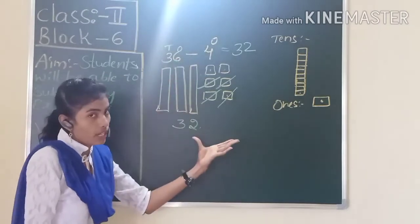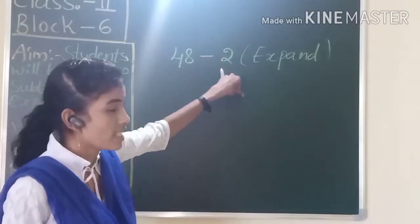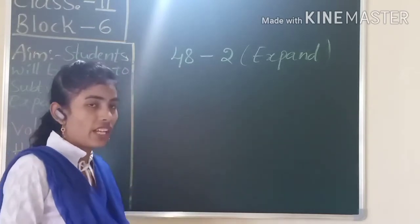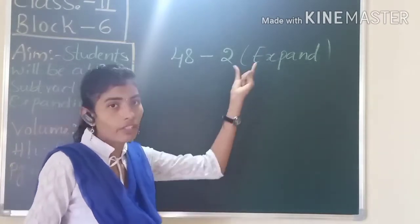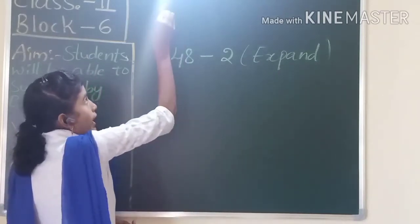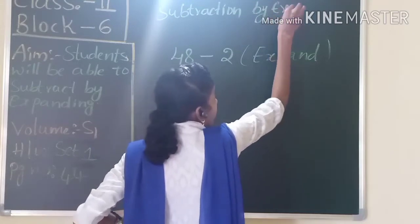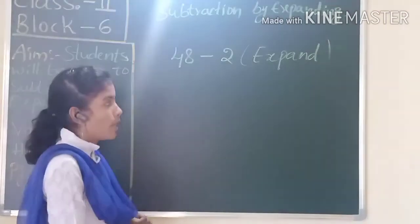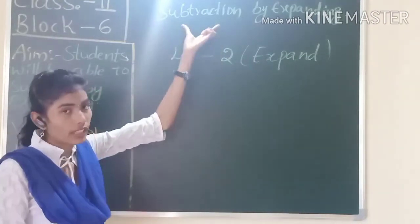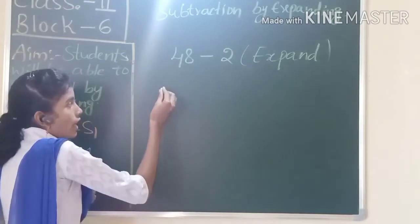First you have to represent the given number using place value blocks, then you have to remove the number. So now 48 minus 2 — I have to subtract these numbers using the expansion method. Up to now we used place value blocks to subtract, and that is very easy. Now this is the expansion method. What is our S1? Today we are going to learn subtraction by expanding method.